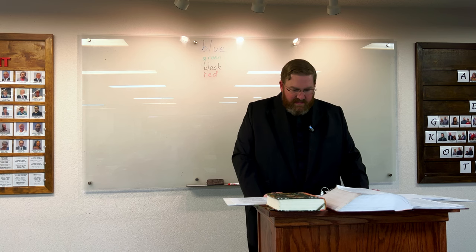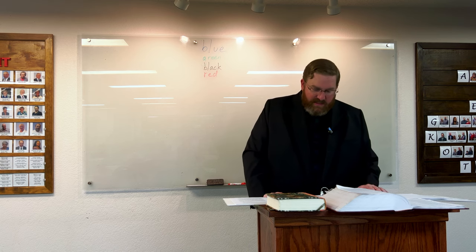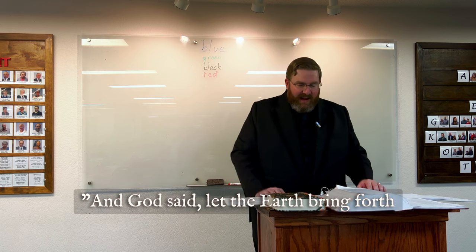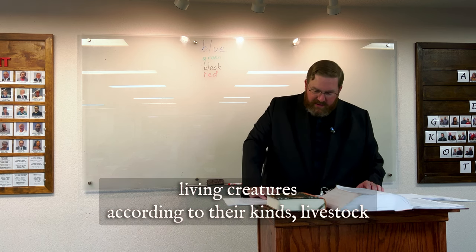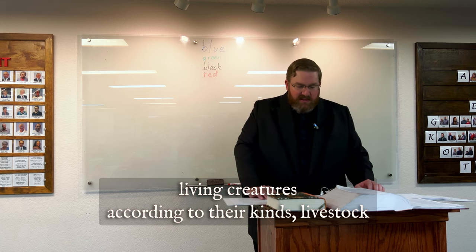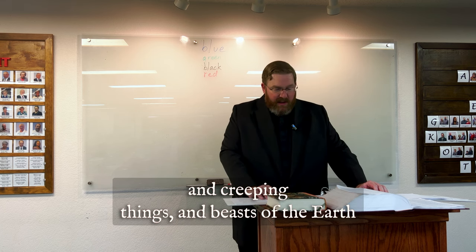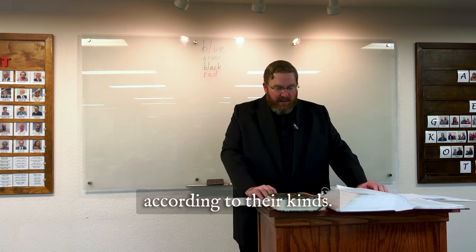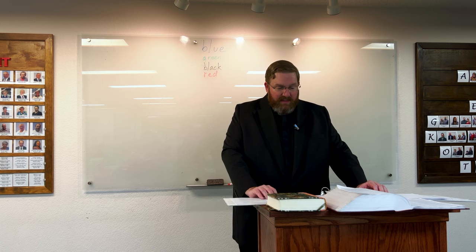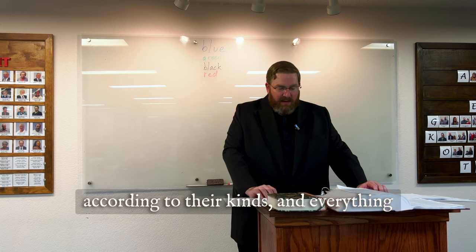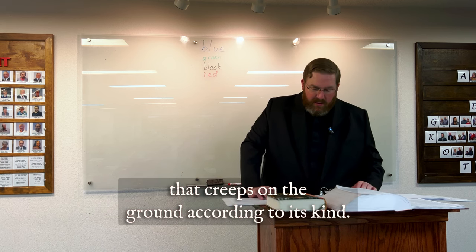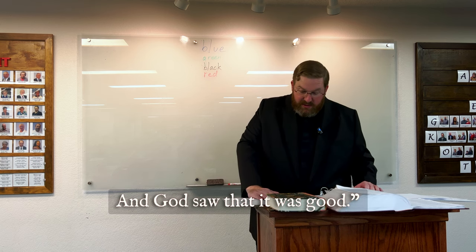Verse 24: And God said, 'Let the earth bring forth living creatures according to their kinds — livestock and creeping things and beasts of the earth according to their kinds.' And it was so. And God made the beasts of the earth according to their kinds, and the livestock according to their kinds, and everything that creeps on the ground according to its kind, and God saw that it was good.